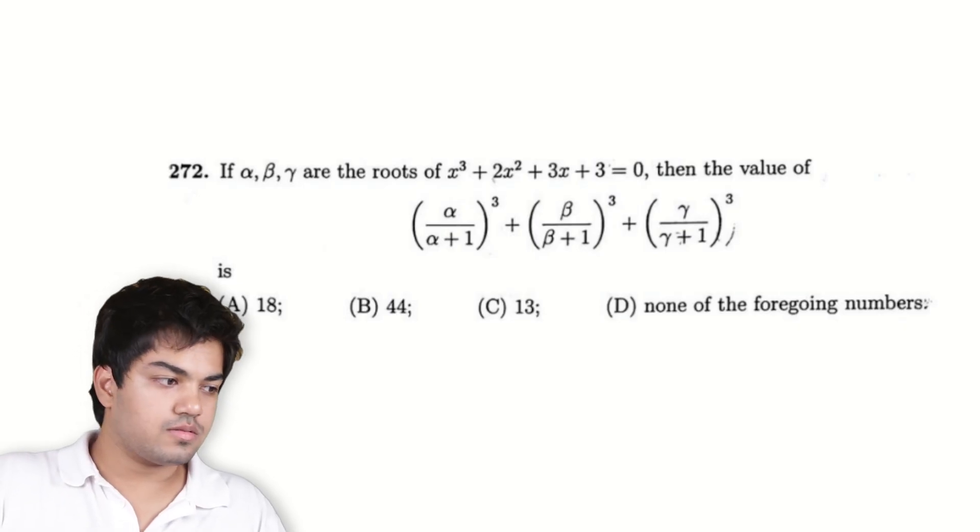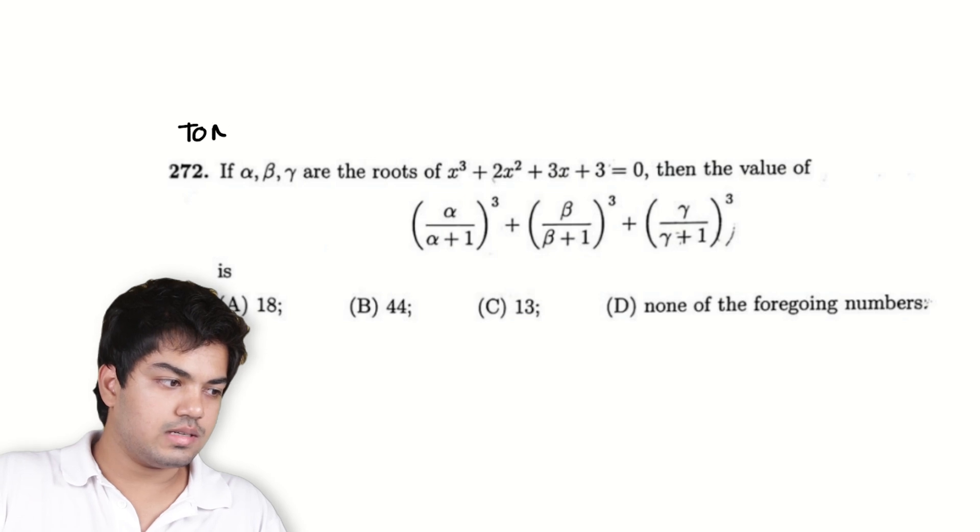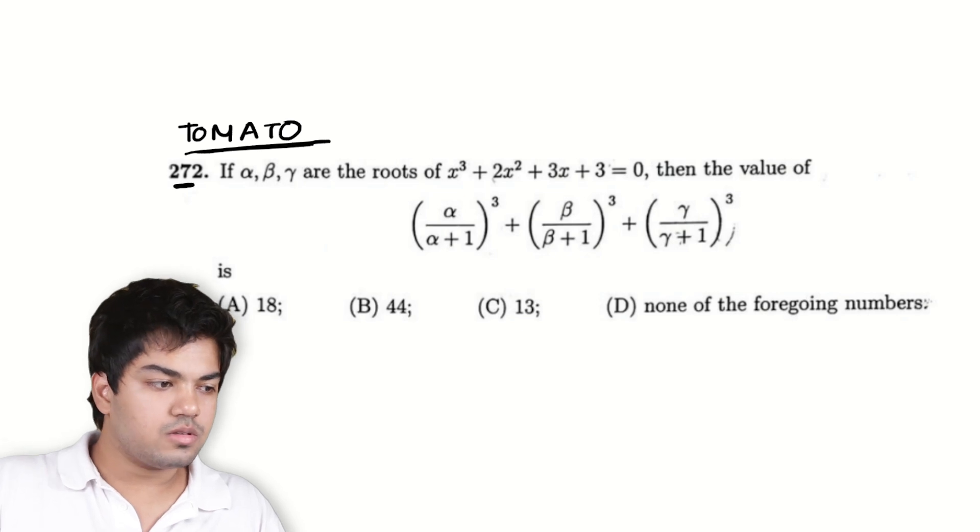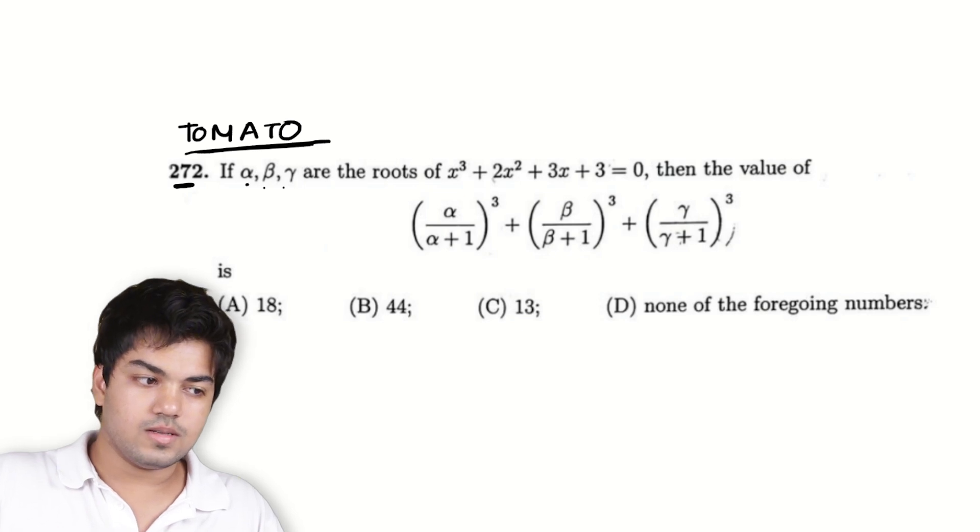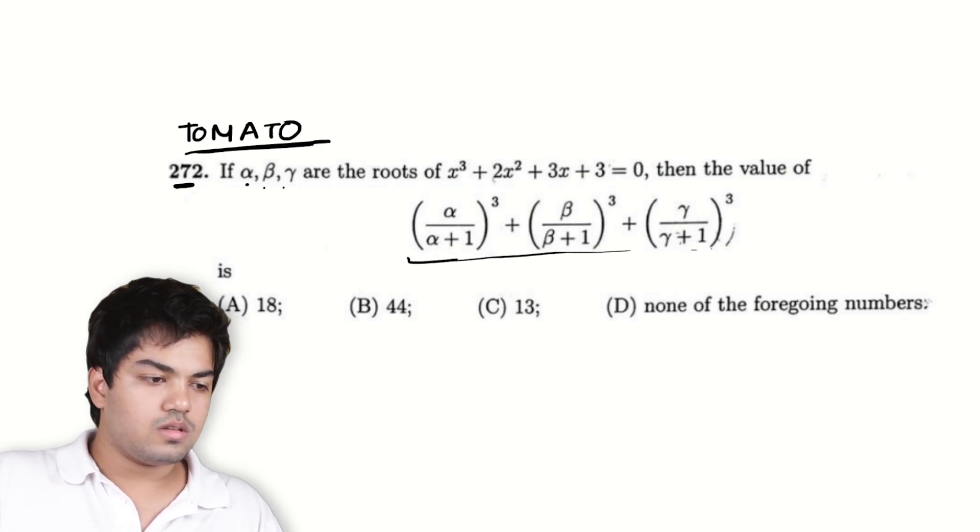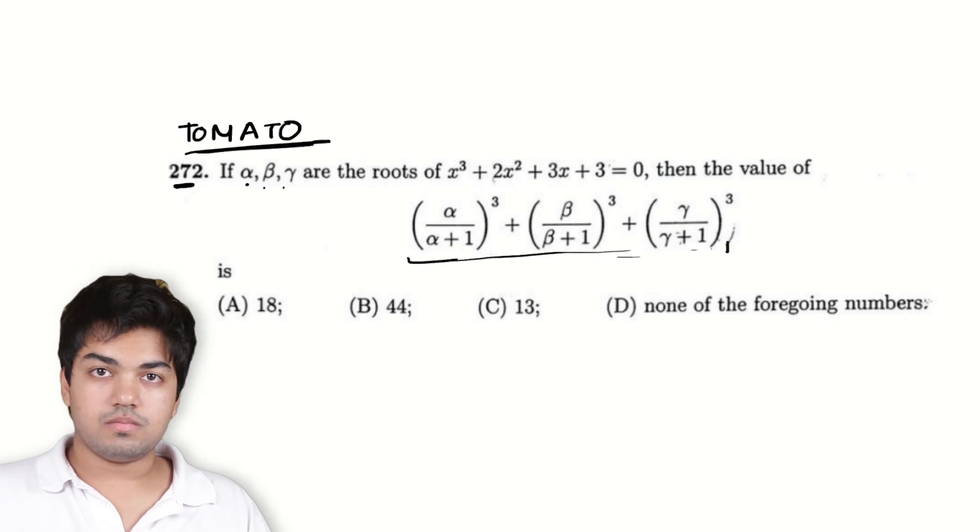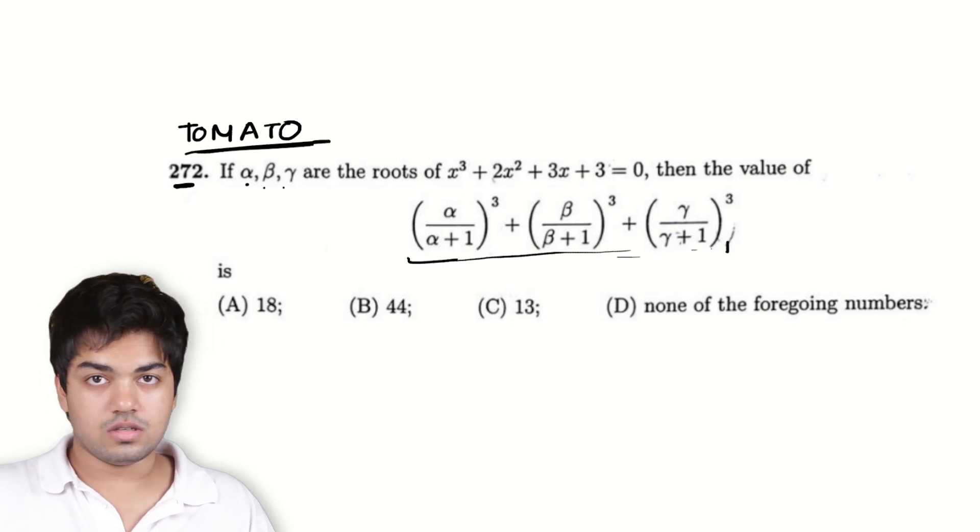So here's the problem from the test of mathematics 10 plus 2 level. This is problem 272 from the book and it says that if α, β, and γ are the roots of this polynomial x³ + 2x² + 3x + 3 = 0, then the value of this expression is what? As usual, pause the video and try it on your own.